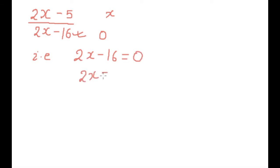2x equals 16, and x equals 8. So the value of x that makes the denominator zero is 8. That's why the value of x cannot be equal to 8 in this rational expression. Let's take another example.